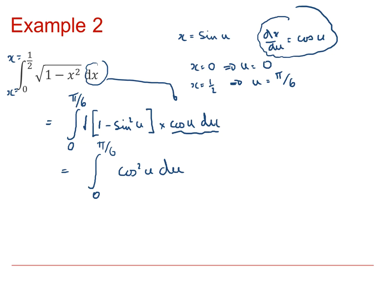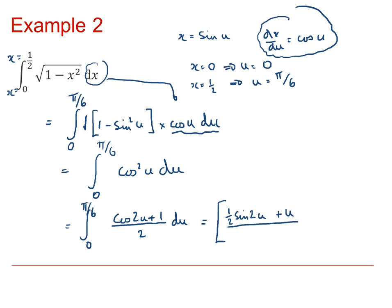We can now integrate, although we need to use the double-angle formula. The integral from 0 to π/6 of cos²(u) is the same as the integral of (cos(2u) plus 1) divided by 2 du, using the identity expressing cos(2u) in terms of cos²(u). Integrating, cos(2u) gives (1/2)sin(2u), and the integral of 1 is u, so we have (1/2)sin(2u) plus u, all divided by 2, evaluated between 0 and π/6.